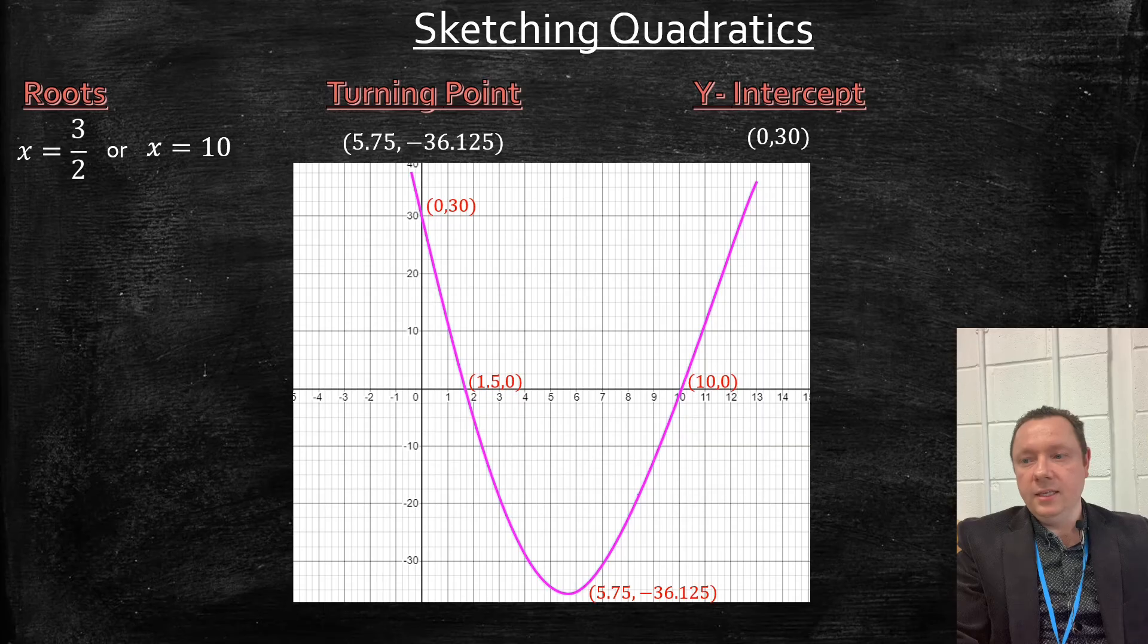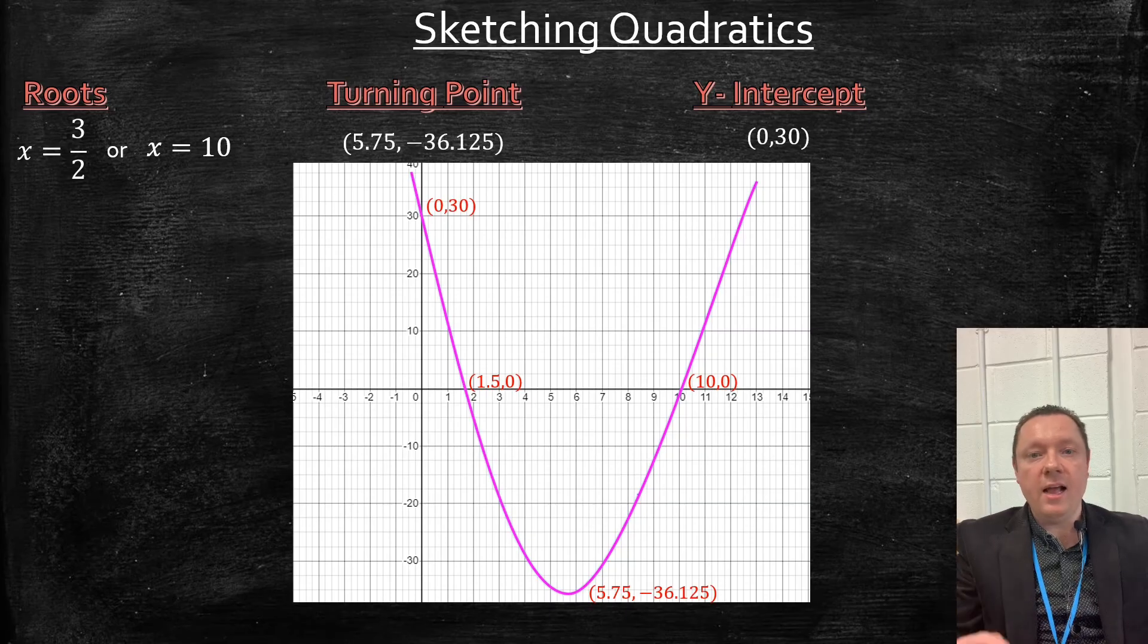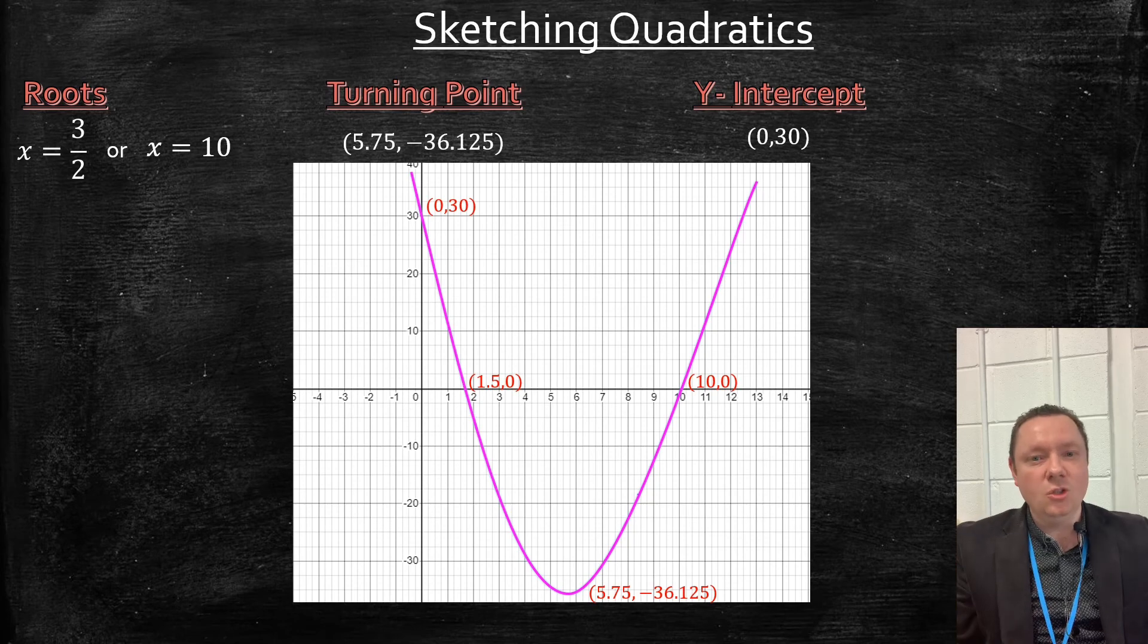(0, 30), (10, 0), (1.5, 0), and our turning point at the bottom. In the exam, you can get away with just sketching that and putting those points in. And as long as you've labelled your points fine and it doesn't look too off, you'll be completely fine with that.